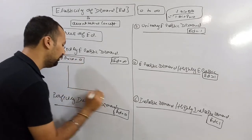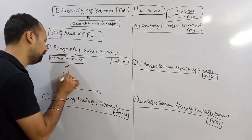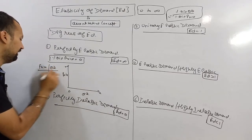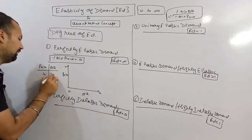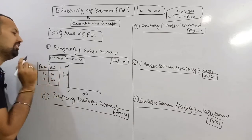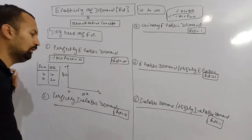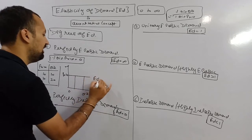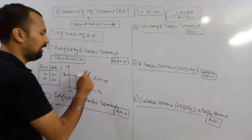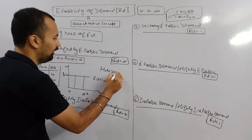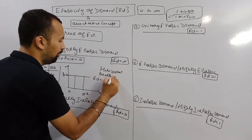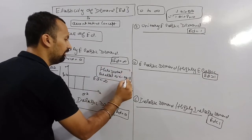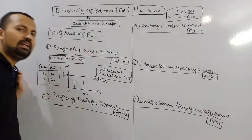This situation can be shown in a schedule. Writing down price and quantity demanded: price is 10 and 10, quantity demanded is 10 and 20. It means there is no change in price, so Ed equals infinity. This situation is represented by a curve that is horizontal, parallel to the x-axis. This is termed perfectly elastic demand.